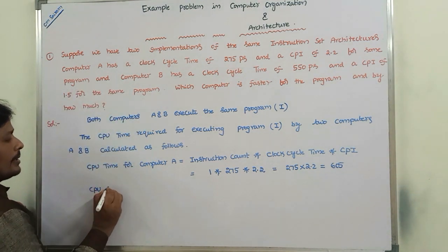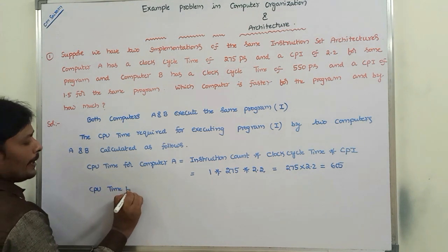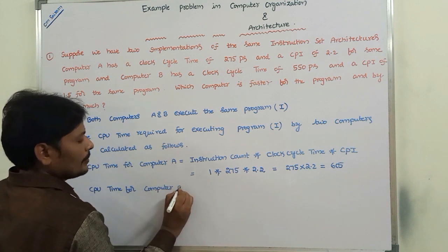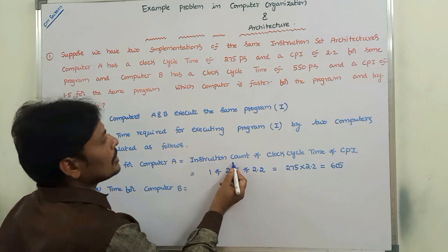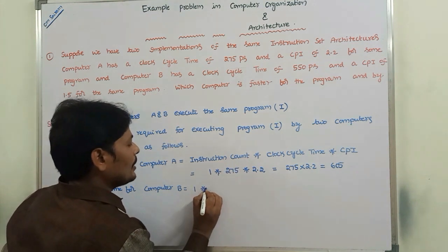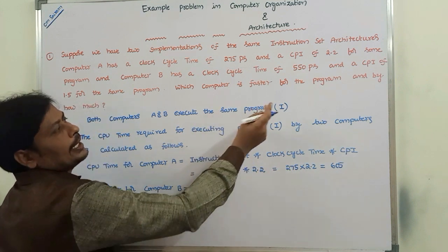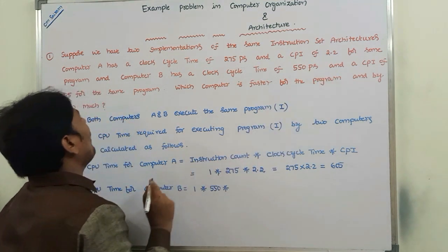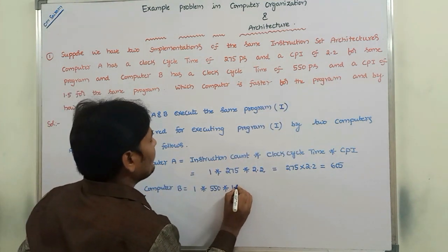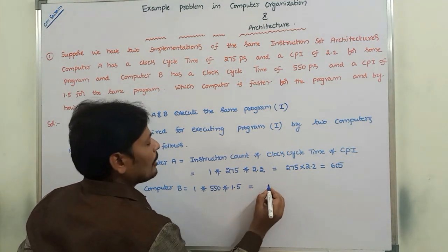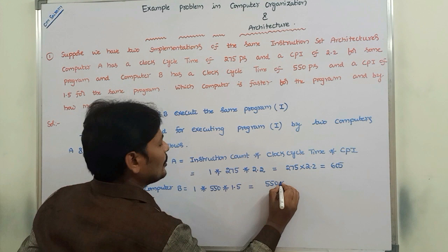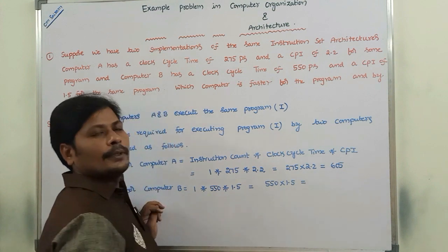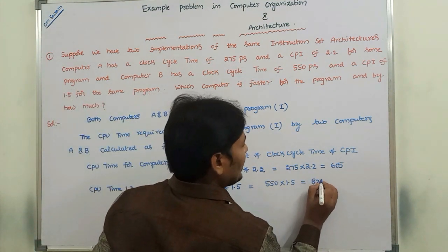In the same way, CPU time for Computer B equals instruction count of 1, multiplied by clock cycle time of 550 picoseconds, multiplied by CPI of 1.5. That equals 550 into 1.5, which is 825 picoseconds.